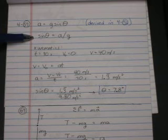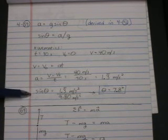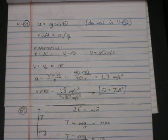Then, we take our angle equation, sine theta equals a over g. So, sine theta equals 1.33 divided by 9.80, and we take the arc sine of that, and that gives an angle of 7.8 degrees.